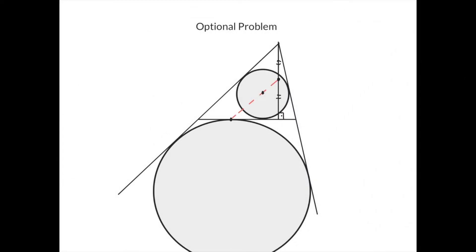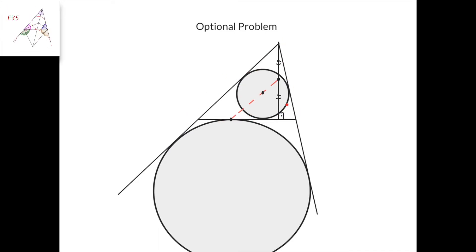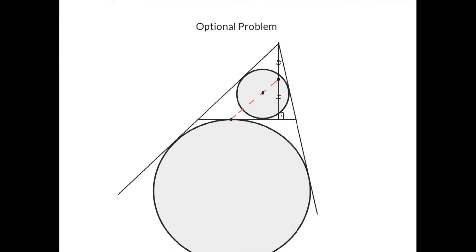This is the optional problem. We have a triangle, its incircle, its incenter, and its excircle that touches this side at this point. This is the altitude to that side, and this is the midpoint of the altitude. We need to prove that this tangency point, the incenter, and this midpoint lie on a straight line.